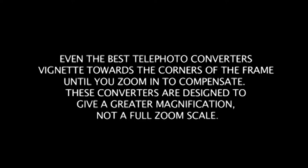These converters are designed to give you greater magnification, not a full zoom scale. When you put it on the lens, the first thing you'll see is vignetting around the top left, right, and bottom left and right edges of the frame until you zoom in. When you zoom in, that vignetting goes away. It's supposed to give you a good close-up, but you're not supposed to be able to use the entire zoom scale like with the 0.7x wide angle.